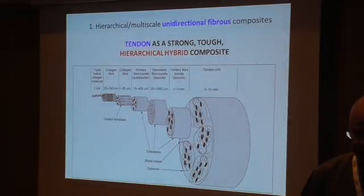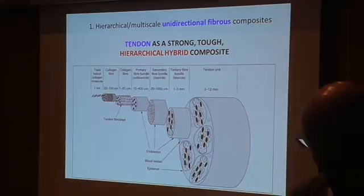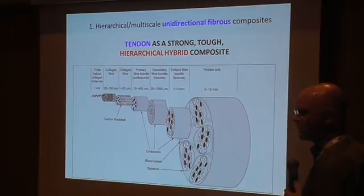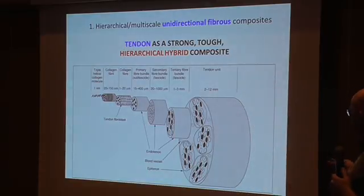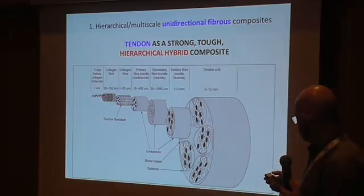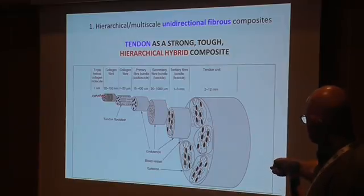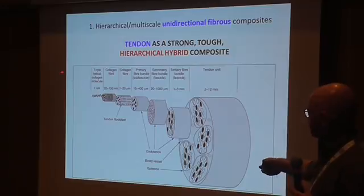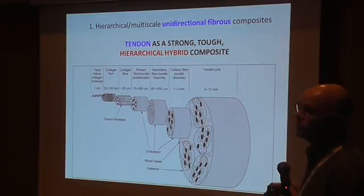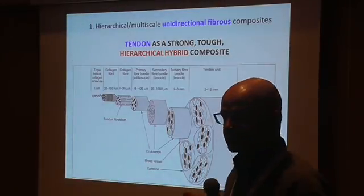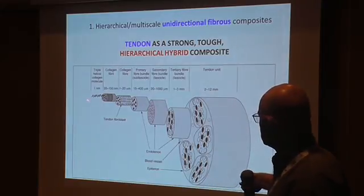The first motif is unidirectional fiber composites. Tendon is a typical example. It's a strong, tough, and hierarchical hybrid composite. It starts at the molecular level and goes all the way up to the full tendon unit. The spectrum of defects is almost non-existent at the smallest scale, and very present at the largest scale, meaning at every level you slightly weaken the fiber. So you have a very strong fiber that becomes slightly weaker at each scale — it's a hierarchical material.